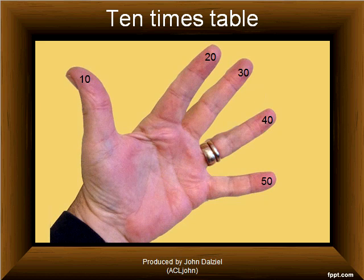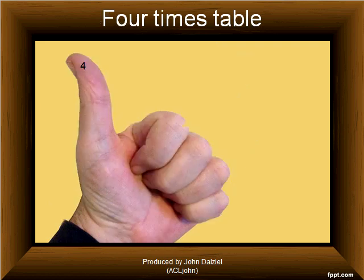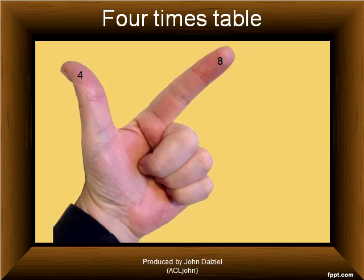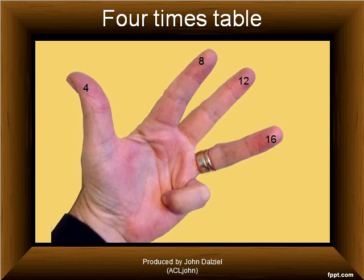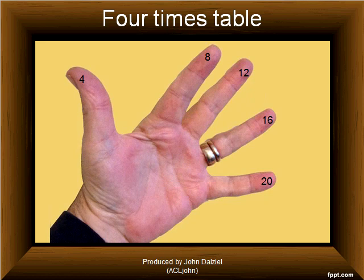The 4 times table however isn't as easy for some learners until they realize that they just need to double twice for each finger and it becomes easier. So for the 4 times table we have 2, 4, 6, 8, 10, 12, 14, 16, 18, 20. Some of you may want to stop the video clip and go back to look at the 2, 3, 5, 10, and 4 times table again.